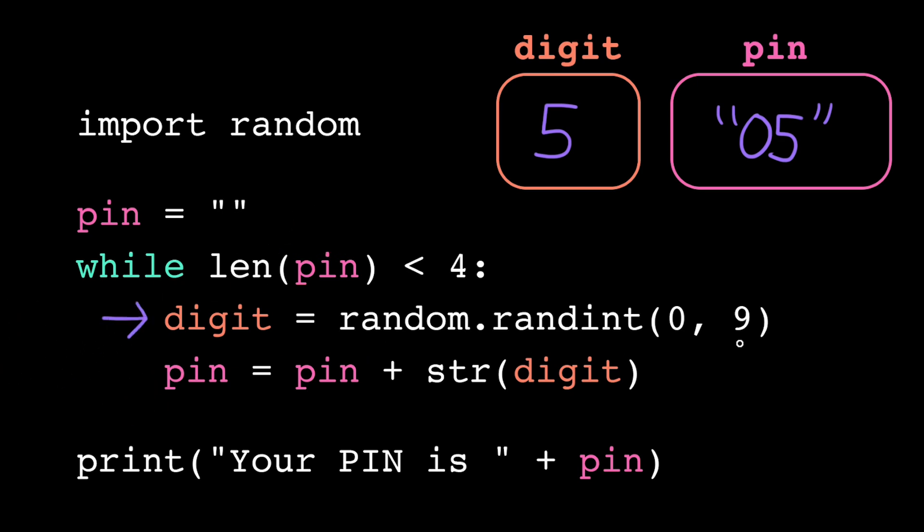We execute the digit assignment statement. Let's say we generate 9 this time. We store that in digit, and then we update pin. Pin is currently 0 5, we concatenate on the 9, and then we store back 0 5 9.